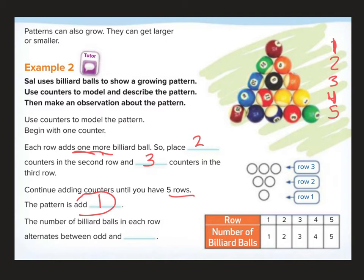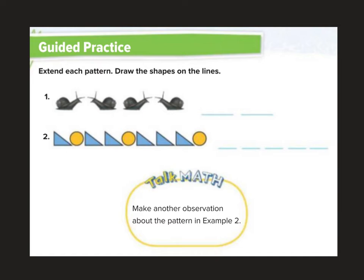Here's our pattern. Add one, right? One plus one is two. Two plus one is three. Three plus one is four. Plus one, plus one, plus one. The number of billiard balls in each row alternates between odd and even is another observation we could say, right? Odd, even, odd, even, odd would be another observation because we're supposed to be listing observations. So that one wasn't so bad. Let's keep going.